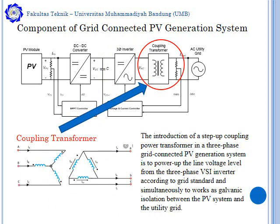Another component of the system is the coupling transformer. The introduction of the step-up coupling power transformer in the 3-phase grid-connected PV generation system powers up the line voltage level from the 3-phase voltage source inverter according to grid standard and simultaneously works as a galvanic insulation between the PV system and the grid.